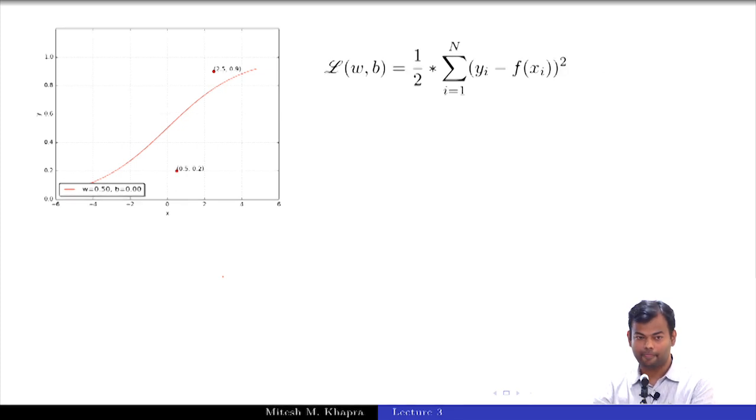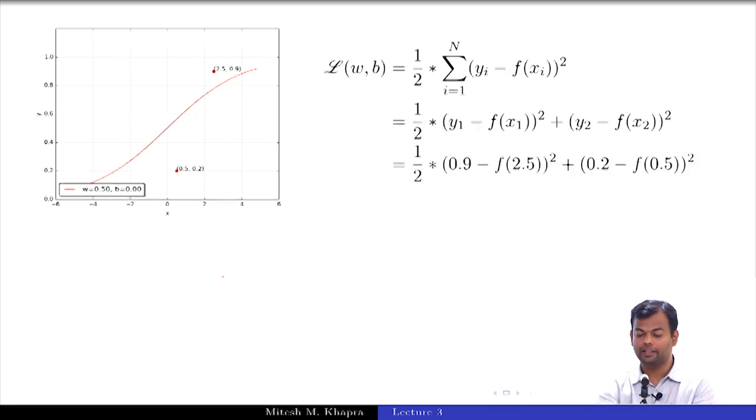So this is what my loss function is. I have two data points, I will just expand it out. Now I will plug in the values. I know this is 0.9 and I will compute the value of f(2.5). I will plug in this and I will plug in this and this is what I get. So this is how bad it is. What did we actually expect it to be in the good case? 0. So this is not 0, this is 0.073. So now we have a quantitative handle on how bad this is. So let us keep this in mind and let us try to continue guessing.